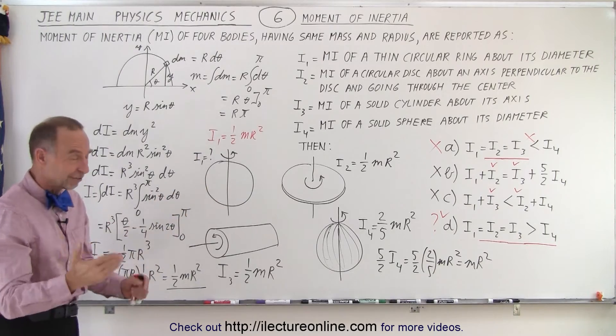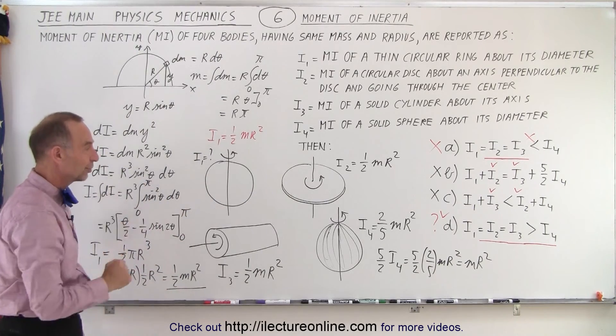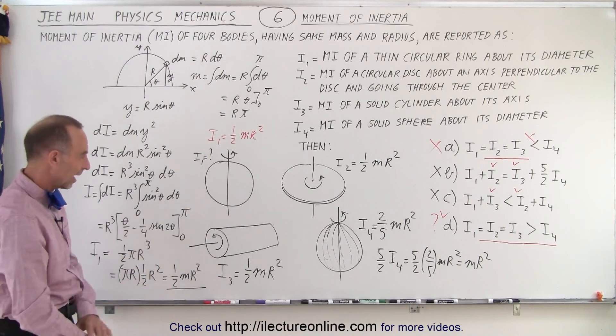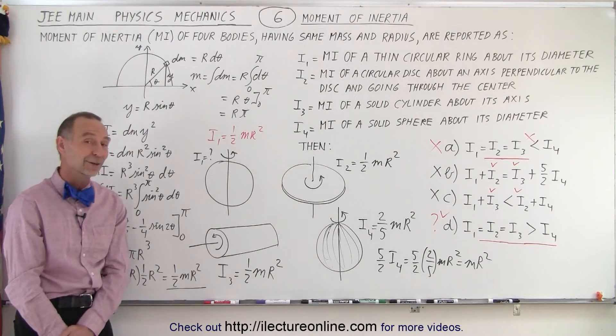And so therefore, now definitively, we know that i1 is equal to i2 is equal to i3, and all three are definitely bigger than i4. So answer D is indeed correct.